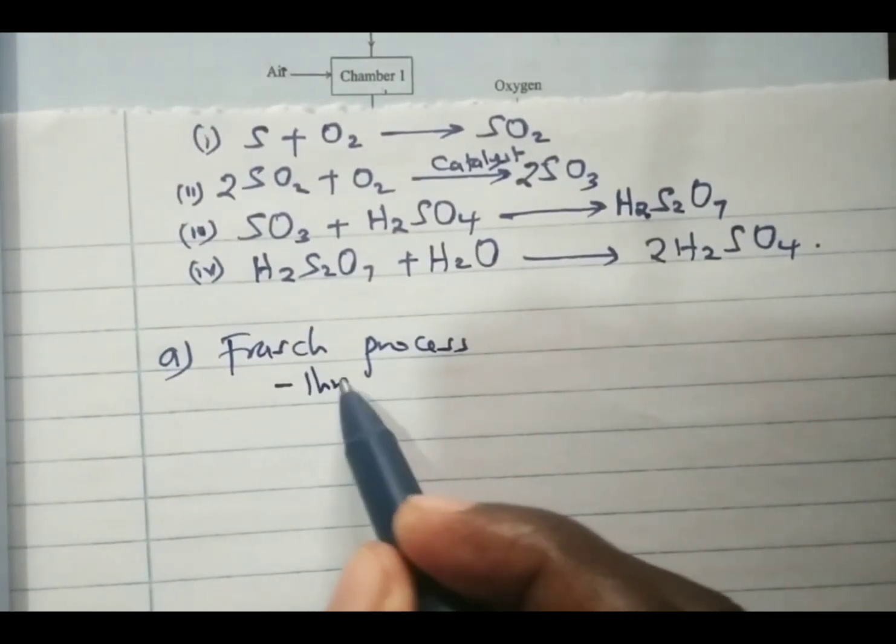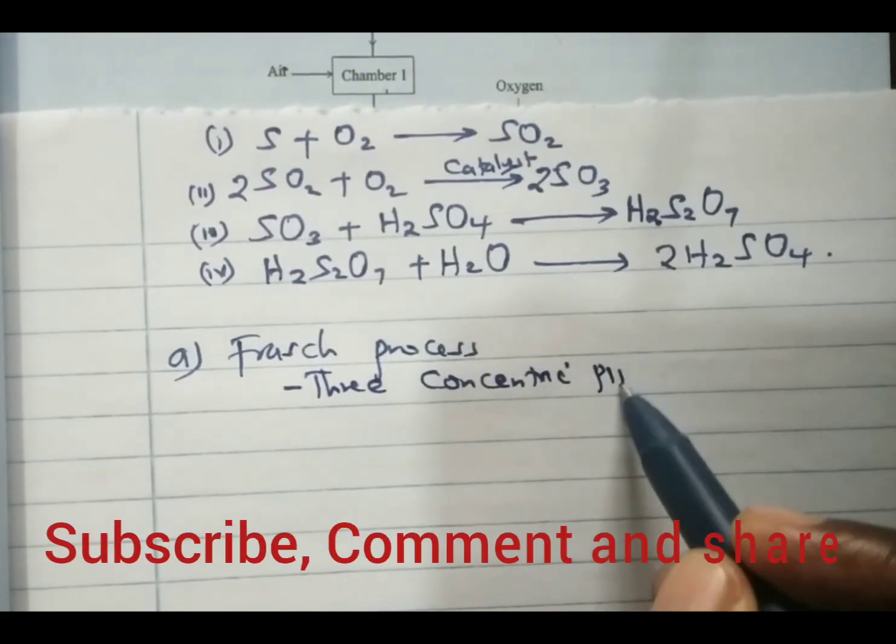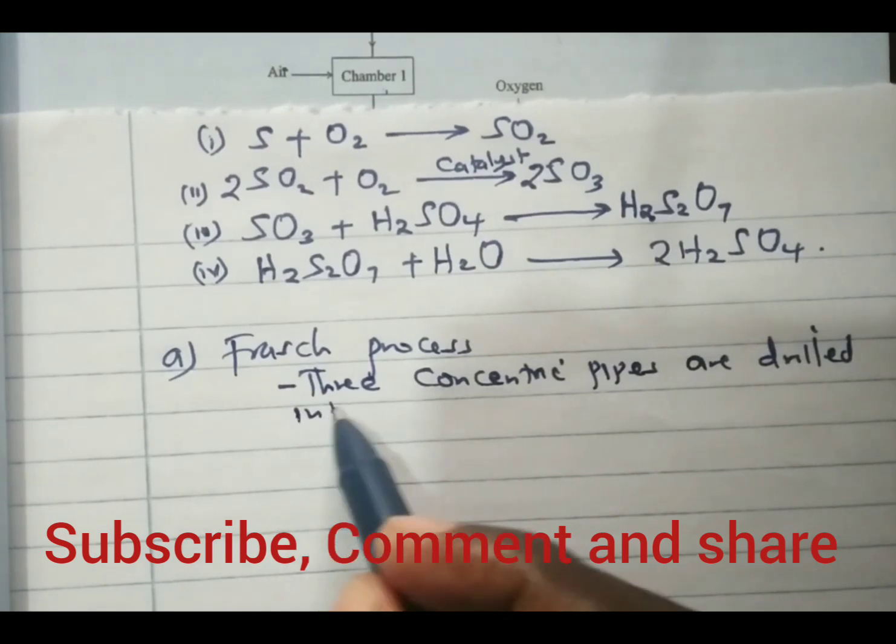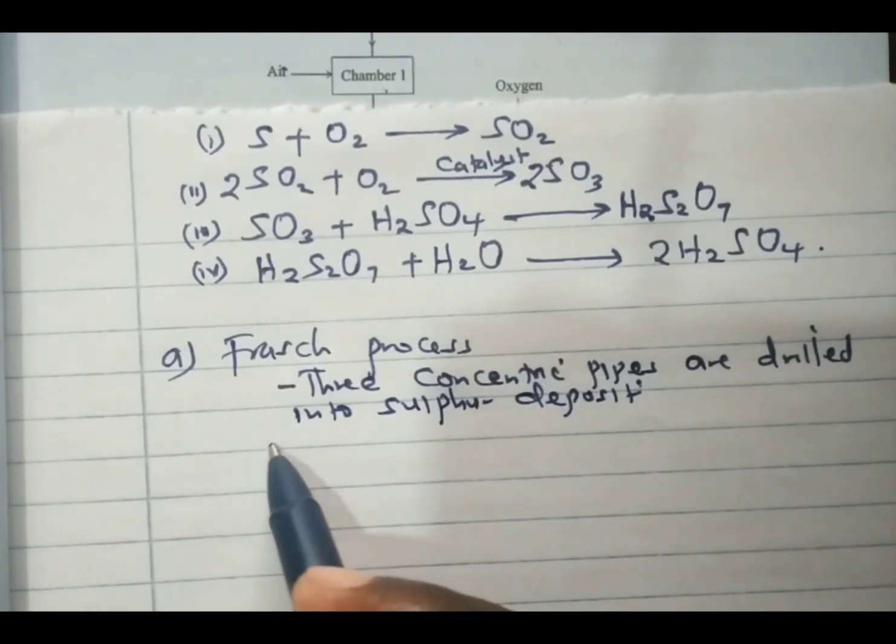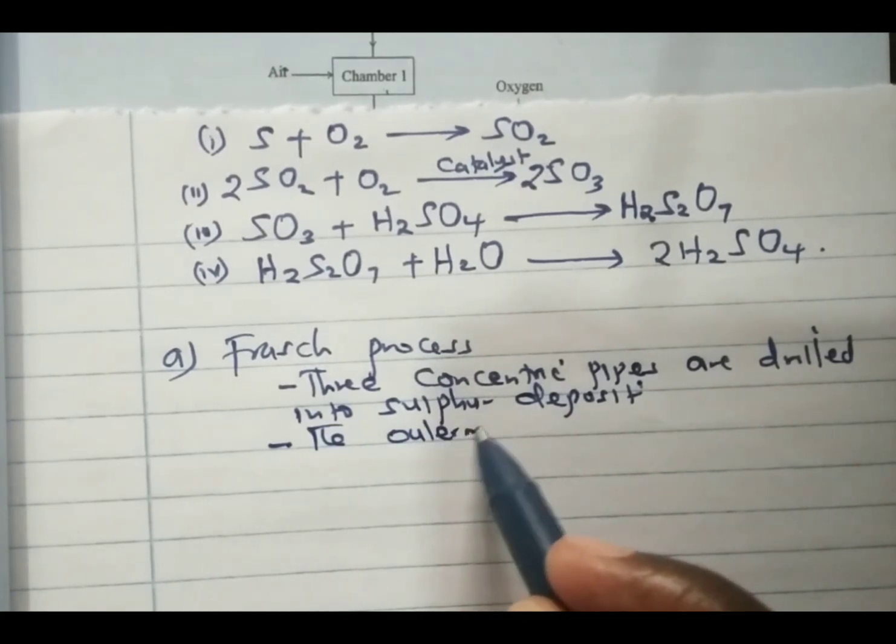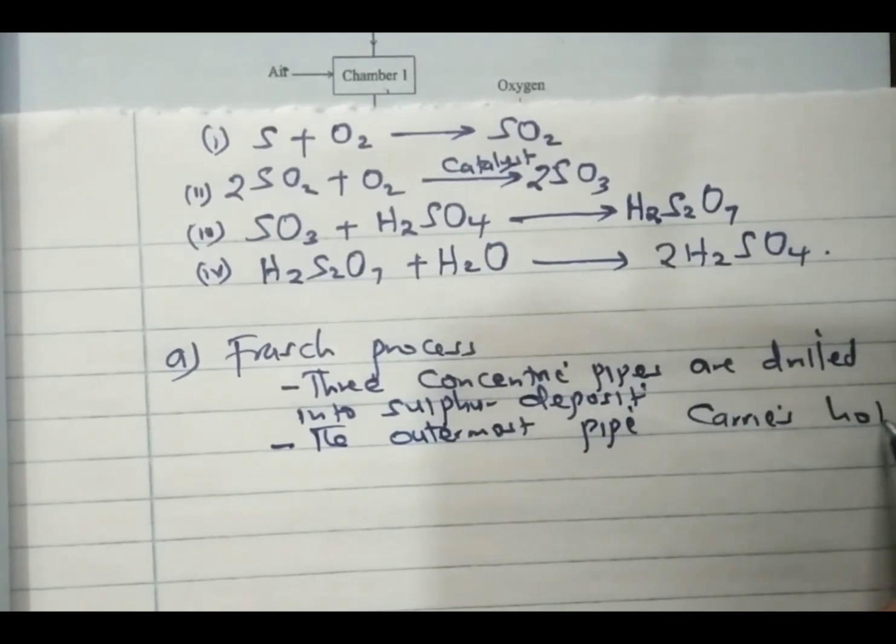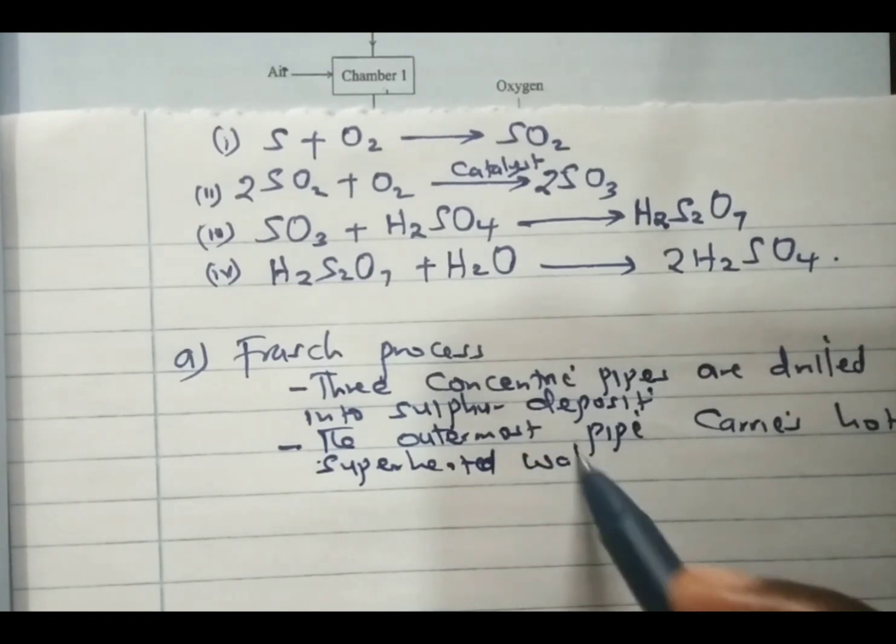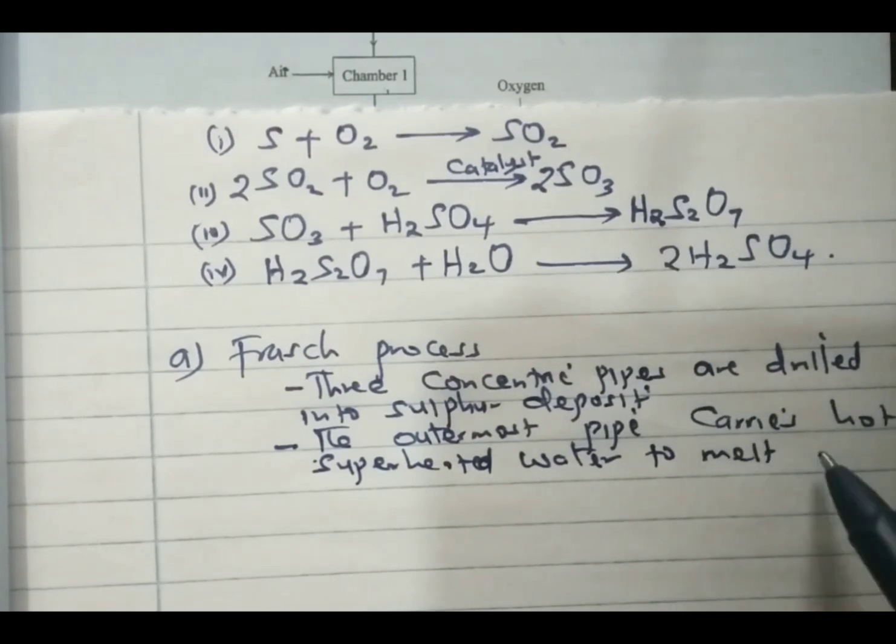In this process, three concentric pipes are drilled into sulfur deposits. Of the three pipes, we have the outermost pipe. The outermost pipe carries hot superheated water, and the hot superheated water is to melt the sulfur deposits.